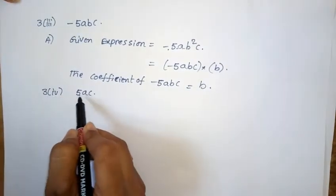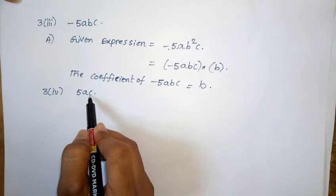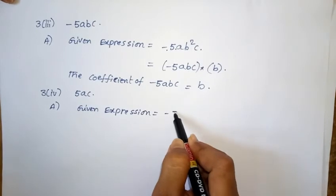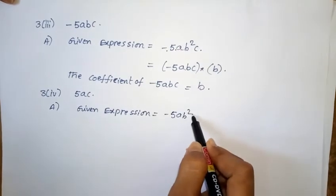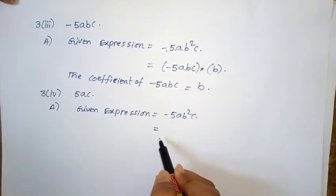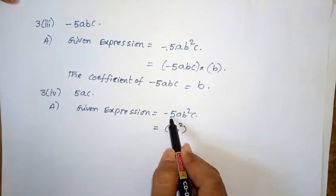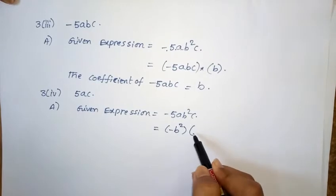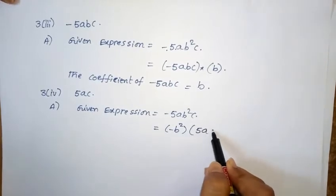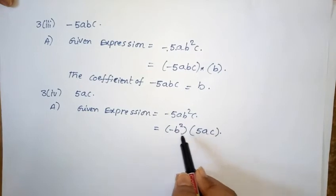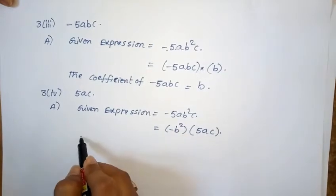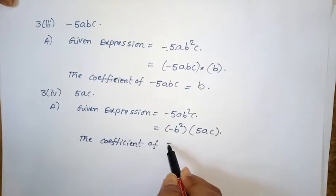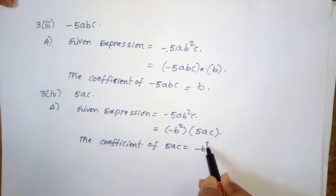Third problem, fourth one: find the coefficient of 5ac. Given expression is minus 5ab²c. Taking minus b² as common, we get minus b² into 5ac. So the coefficient of 5ac is equal to minus b².